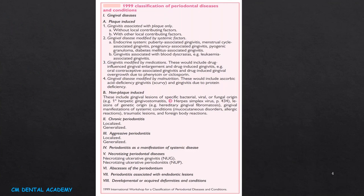This is the 1999 Classification of Periodontal Diseases and Conditions. The changes made in the 2017/18 classification include advantages and drawbacks. Initially it was broadly classified as gingival diseases, chronic periodontitis, aggressive periodontitis, periodontitis as a manifestation of systemic disease, necrotizing periodontal diseases, abscesses of the periodontium, periodontitis associated with endodontic lesions, and developmental or acquired deformities and conditions.